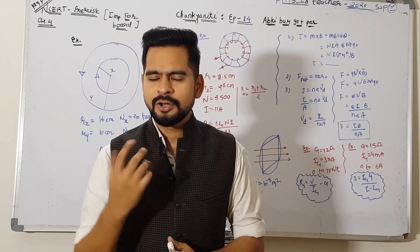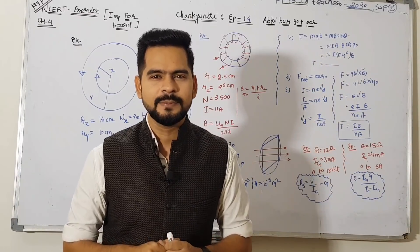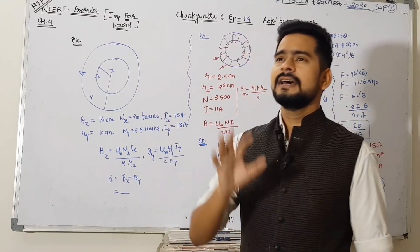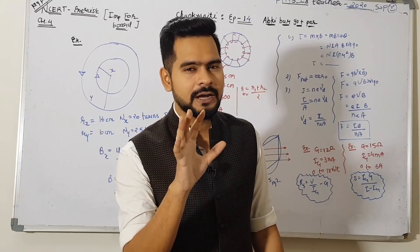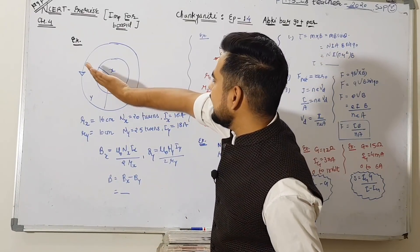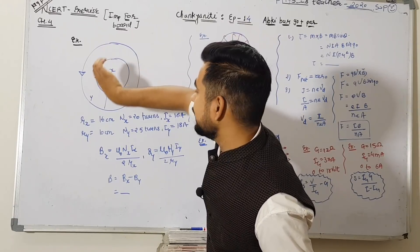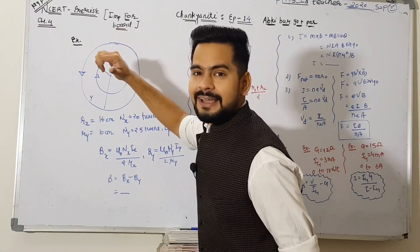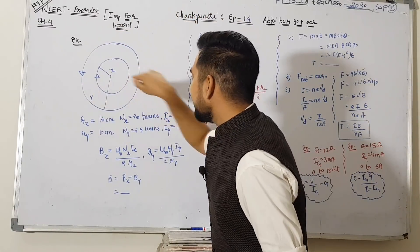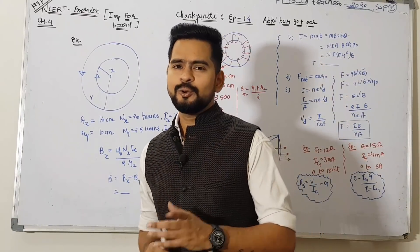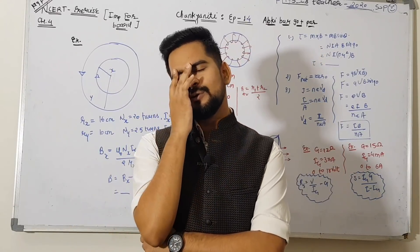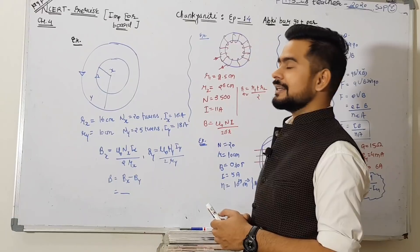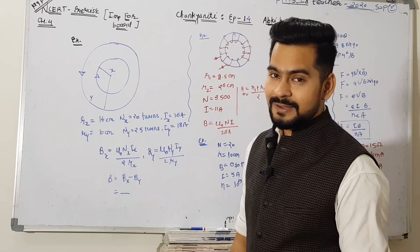Question arises: kaise jaanein ki andar hai ya bahar hai, direction kaun si hai? Simple - apne right hand ka use karo for circular coil direction. Net magnetic field hogi. Agar dono opposite hain, toh minus ho jayega - ek ko minus karo. Sawaal yeh uthta hai ki kis ko minus karein - Bx minus By ka matlab Bx is greater than By. Agar By minus Bx nikalte ho to answer minus mein aata hai, toh samajh jaana ki jo value aapne li thi woh badi thi.